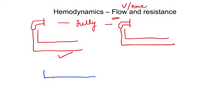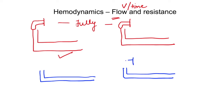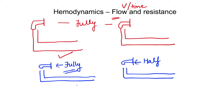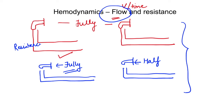Now consider another version where the diameter of the tubes is the same, but one tap is opened fully and the other is only half open. In which tube will flow be more? Obviously in the fully open tap. So flow depends on two very important things: resistance and pressure. Diameter relates to resistance, and the pushing force for flow is the pressure.